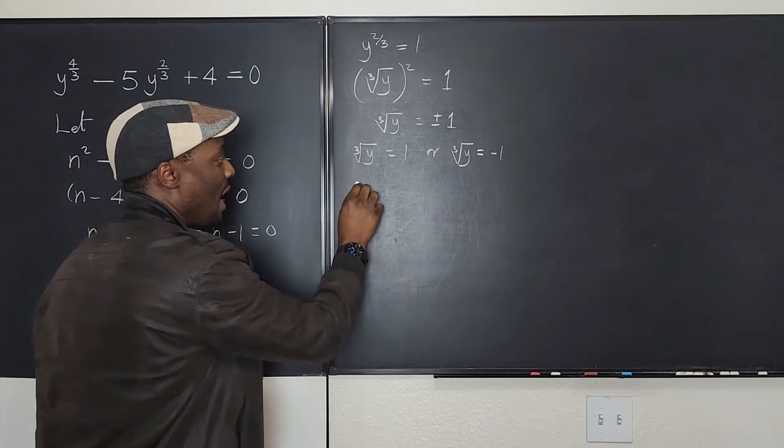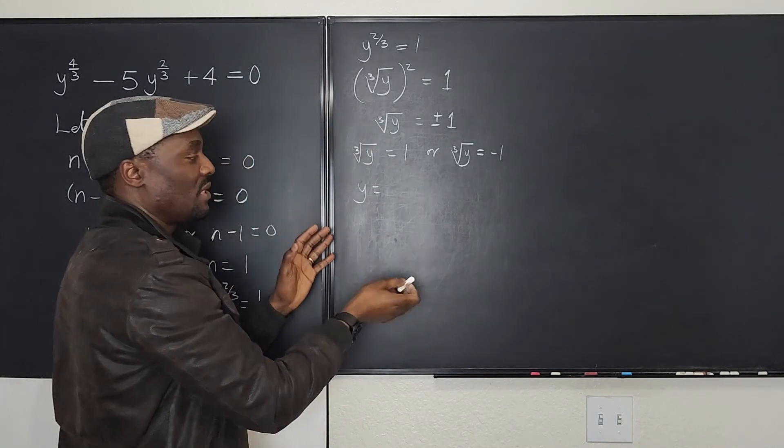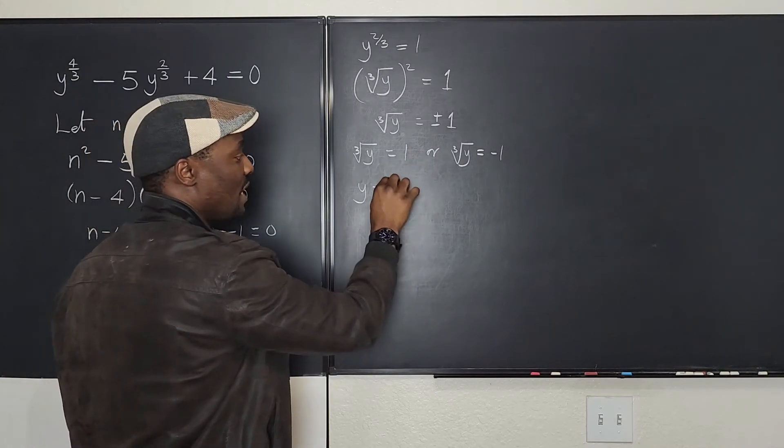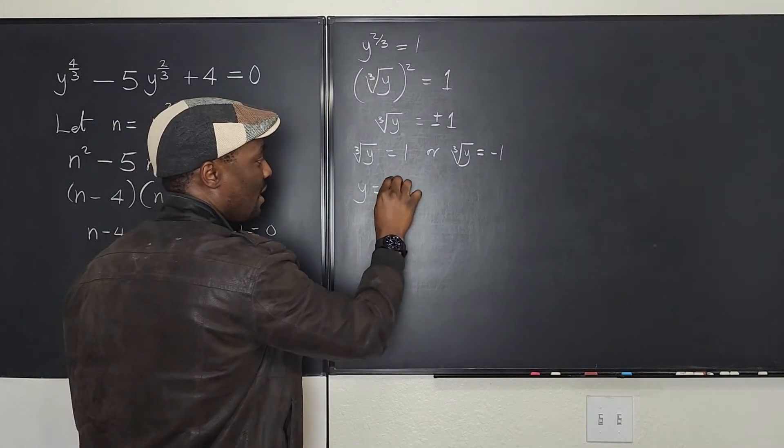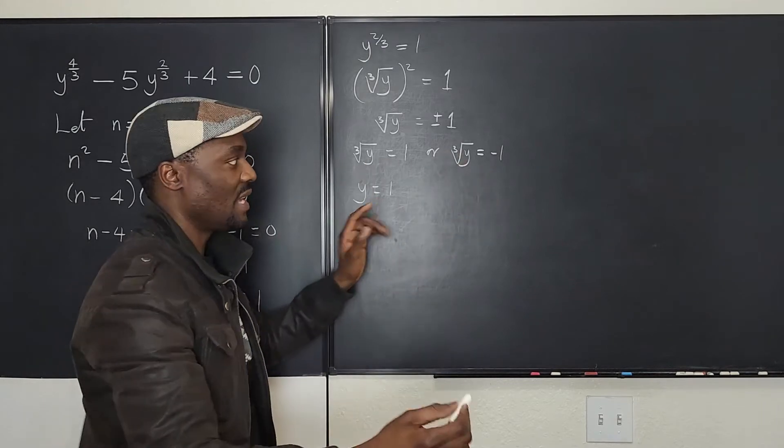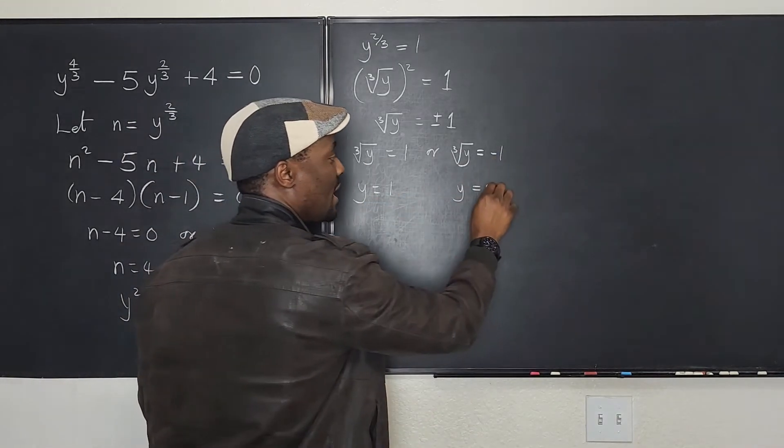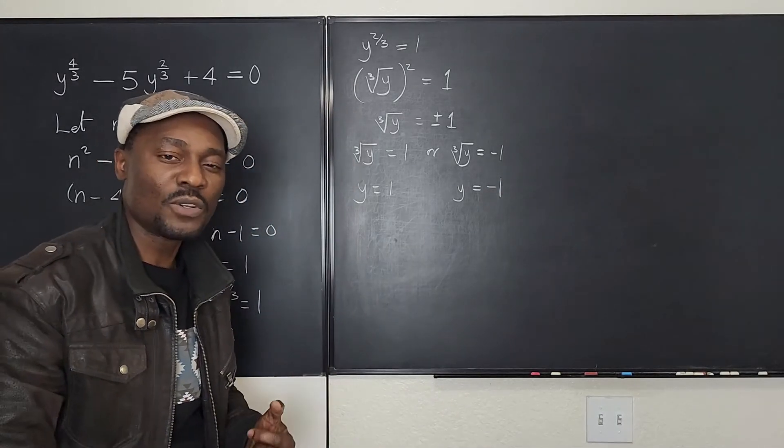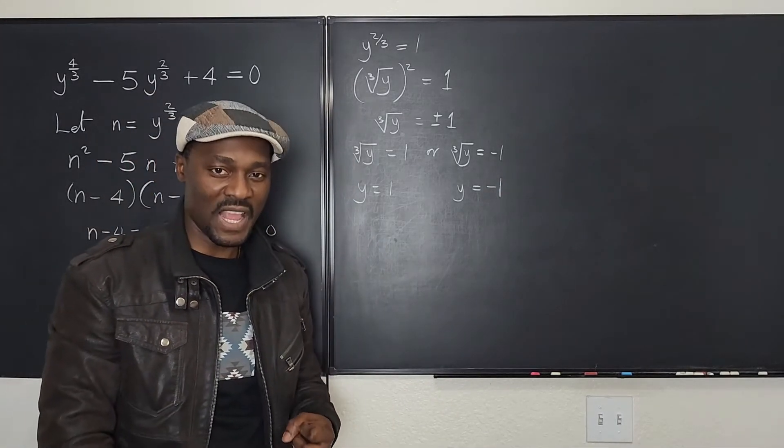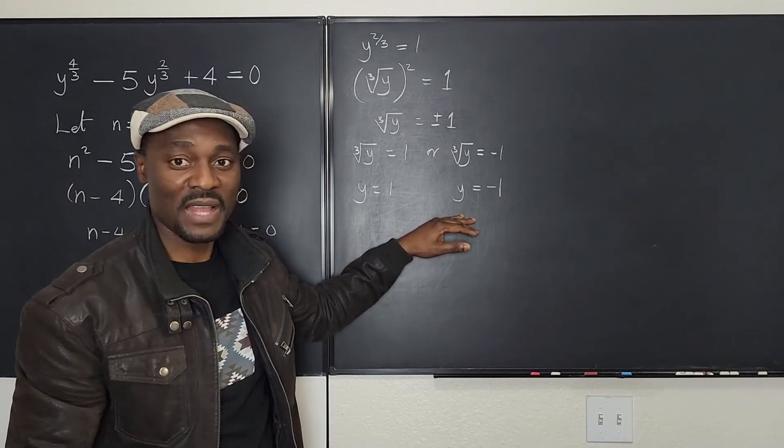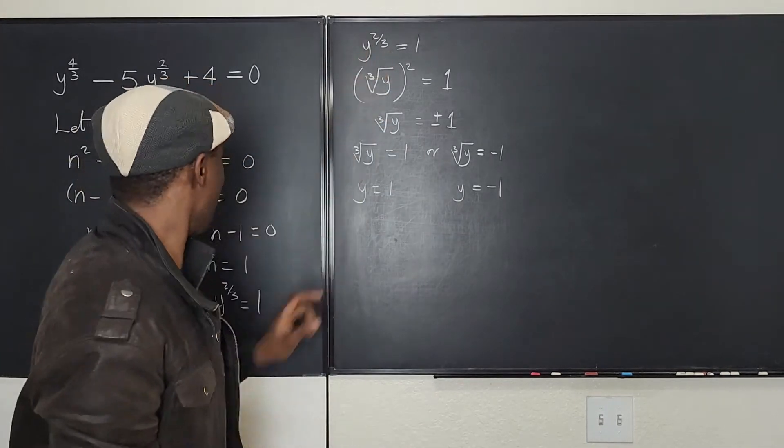So my y is going to be, if I cube both sides, it's going to be 1 cubed, it's going to be 1. If I cube this both sides, I'm going to get rid of this cube root side and the cube of negative 1 is negative 1. So I have two answers, y equals 1 or y equals negative 1. Those are the two possible answers using y, the solution.